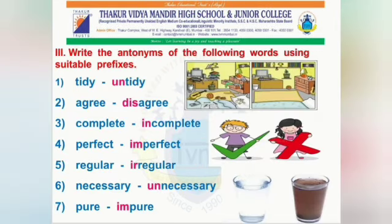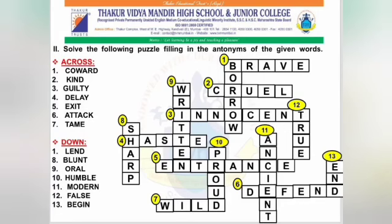Third question: write the antonyms of the following words using suitable prefixes. First: tidy–untidy. Second: agree–disagree. Third: complete–incomplete. Fourth: perfect–imperfect. Fifth: regular–irregular. Sixth: necessary–unnecessary. Seventh: pure–impure.